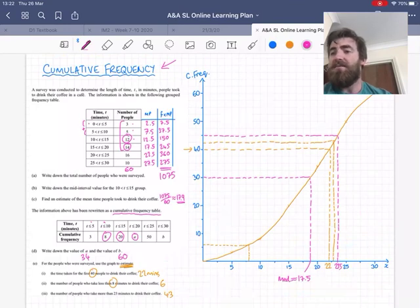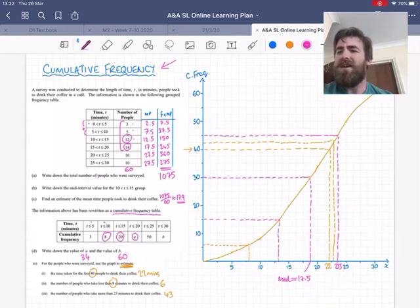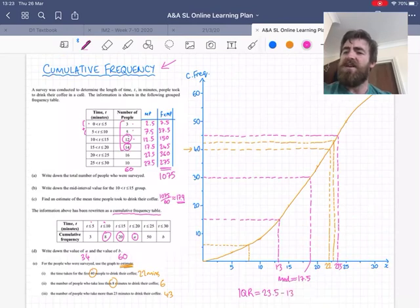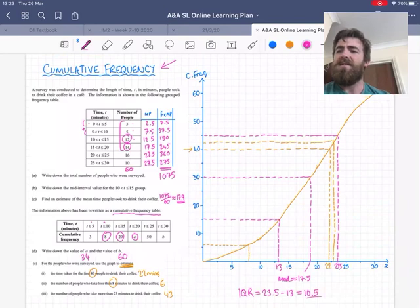And that would be my Q3 value. And I could trace across from a quarter of the way through 60, so the 15th person, and I trace down to 13. So that would be my Q1 value. To find the interquartile range, I'll do 23.5 minus 13, I get 10.5. Just a few of the things we can do with these cumulative frequency graphs. That's all you need to do with these terms. Thank you.